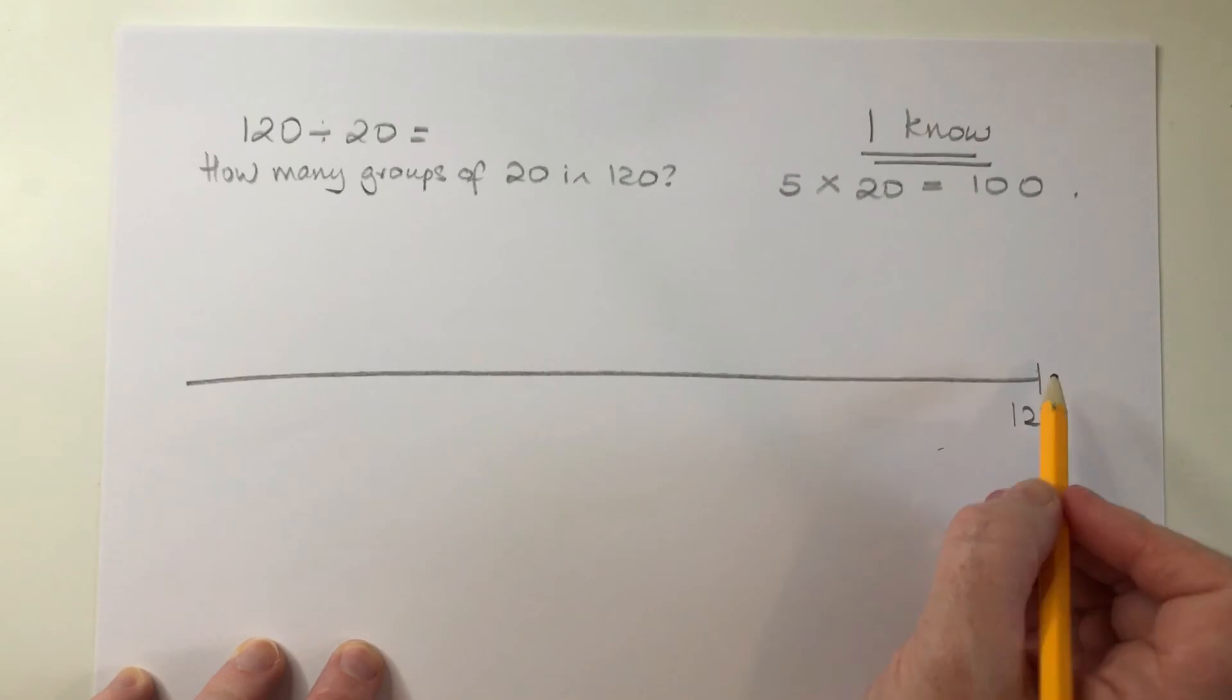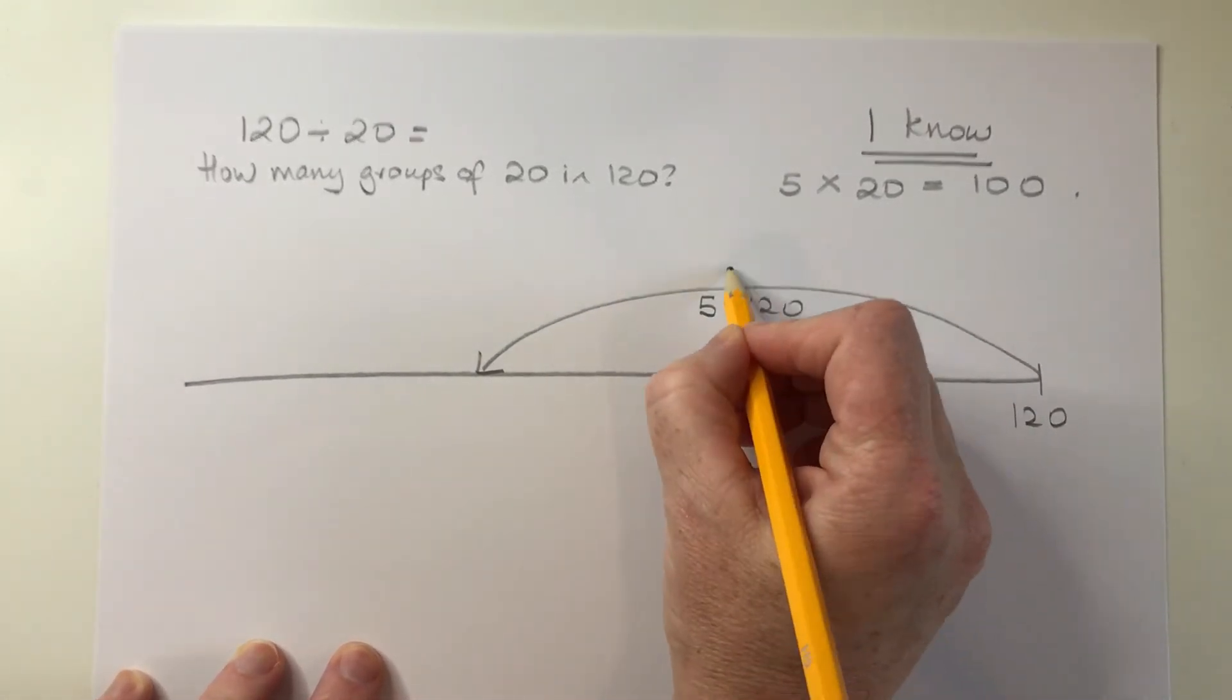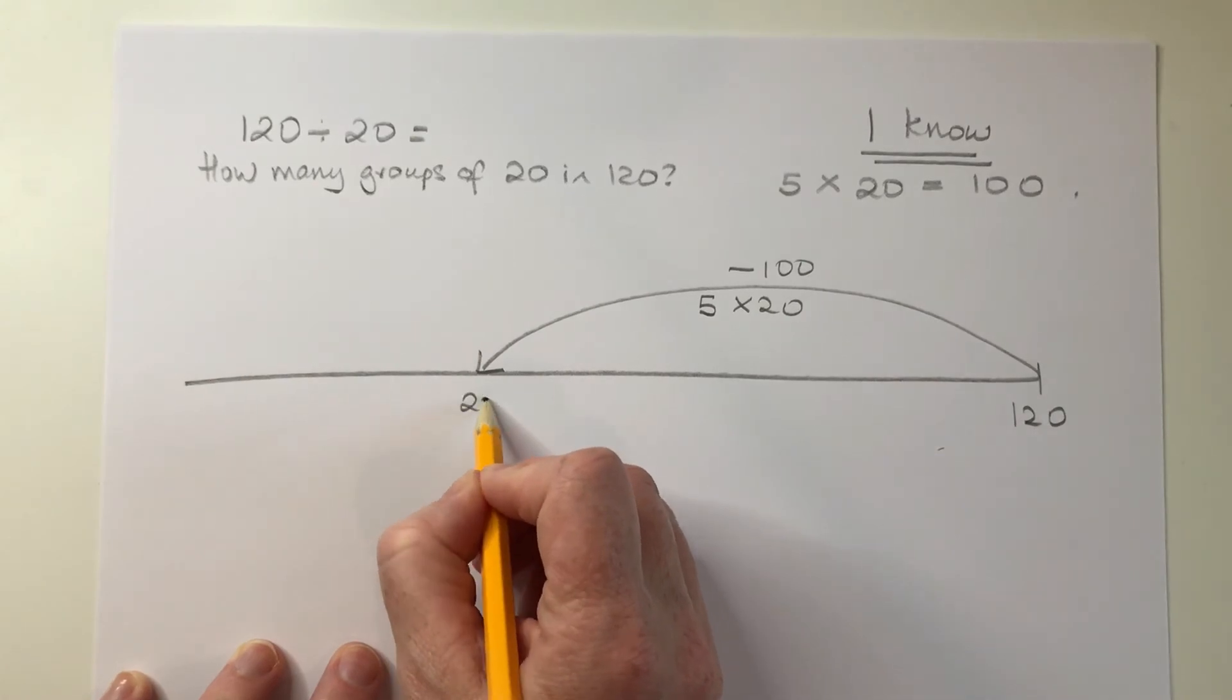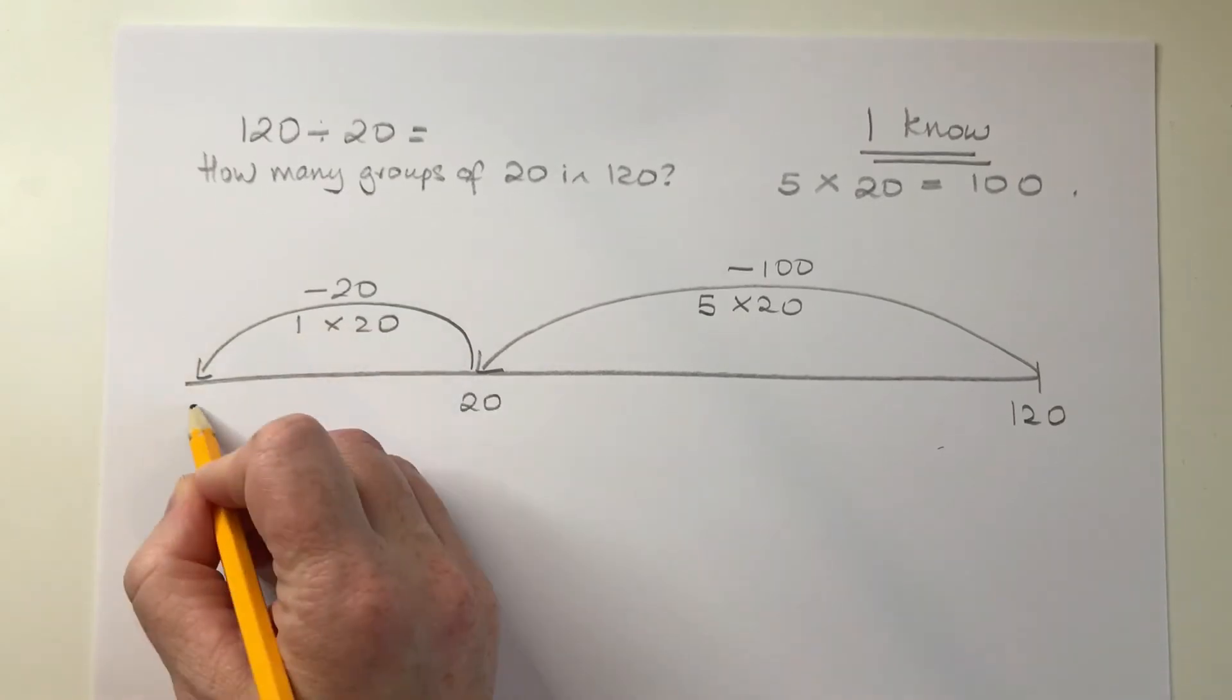Sometimes this method of division is called repeated subtraction when the jumps are going down the number line rather than up. But whichever direction you move, the number line is a wonderful tool to help you figure out and keep track of how many groups are in a certain number.